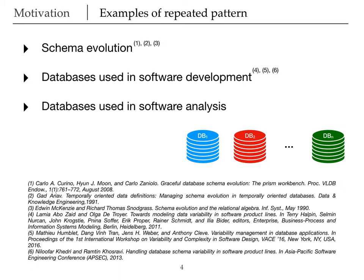Let's go back to the pattern of juggling multiple similar yet distinct databases. Multiple instances of this pattern have been thoroughly studied and there are tools that address them. Schema evolution and databases used in software development are examples of these kinds of instances. On the other hand, some instances of this pattern only have manual workarounds which fall onto developers and database administrators to carry out, such as databases used in software analysis and tests. I'll briefly explain each of these instances.